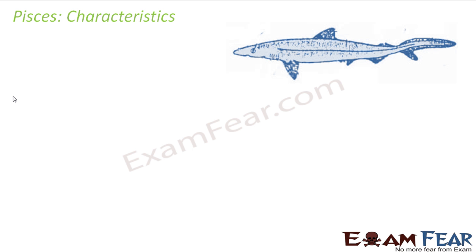Pisces — the word Pisces refers to fishes, so all fishes fall under this category of vertebrates. In the living organisms hierarchy, fishes fall under Pisces, Pisces falls under vertebrates, vertebrates fall under chordates, and chordates fall under Animalia.